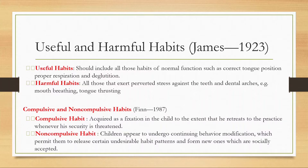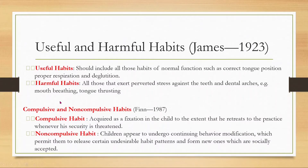For classification, we have many classifications. James classified habits as useful and harmful. Useful habits are for normal function, such as correcting tongue position and deglutition. Harmful habits act against the teeth. Then there is the classification by Larches, like mouth breathing and tongue thrusting. We also have another classification given by Finn: compulsive and non-compulsive.